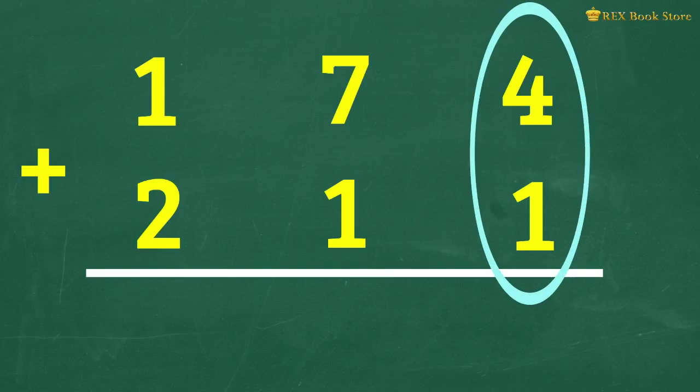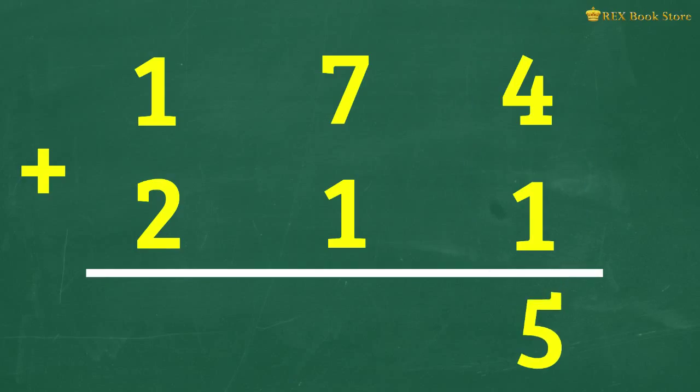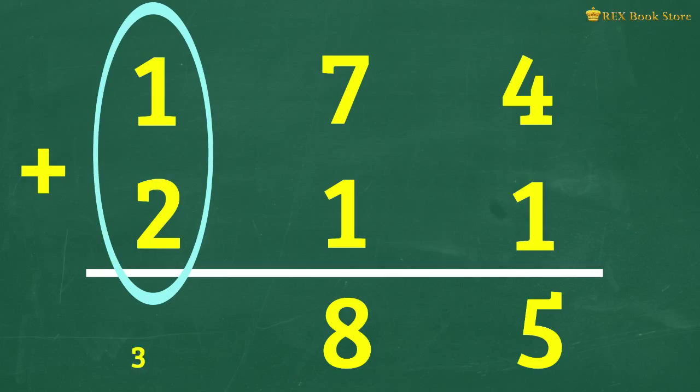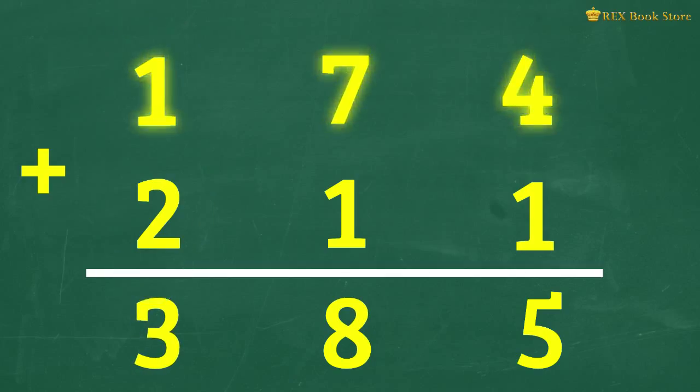4 plus 1 is equal to 5. Then the tens. 7 plus 1 is equal to 8. Lastly, the hundreds. 1 plus 2 is equal to 3. So 174 plus 211 equals 3 hundreds, 8 tens, 5 ones or 385.